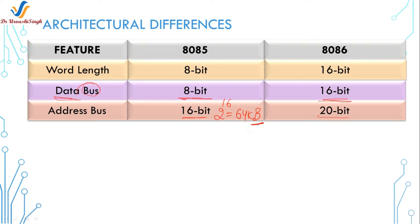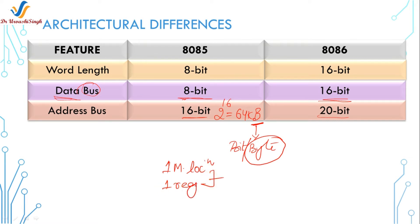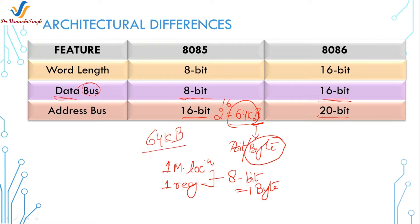The memory size is 64 KB for the 8085 microprocessor. Most students get confused whether this 'B' is bits or bytes — to make it clear, this is bytes: 64 KB. This is because one memory location is one register and the occupancy of that register is maximum 8 bits, which is one byte. That's why the 8085 can address 64,000 memory locations and the maximum interfaceable memory is 64 KB. In the case of 8086, it is 2 to the power 20, which is 1 megabyte.